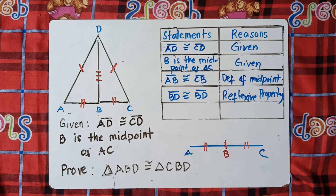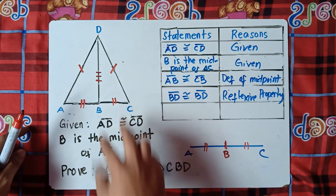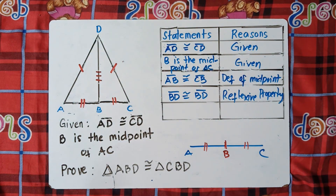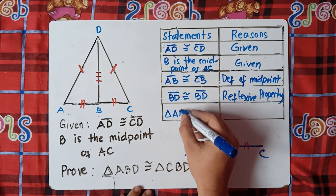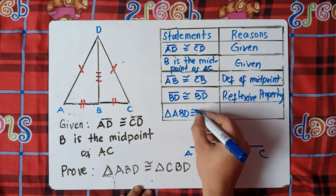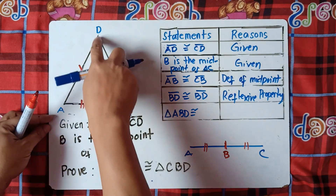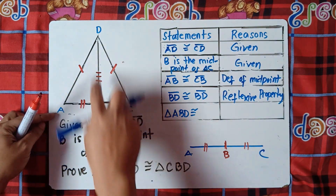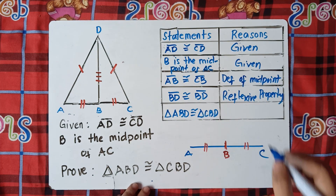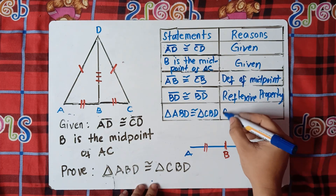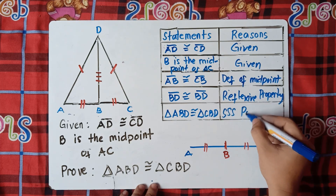Since we already have three sides which are congruent — AD and DC, AB and BC, and the shared BD — according to the SSS postulate, if three sides of one triangle are congruent to the other three sides, the two triangles are congruent. So triangle ABD is congruent to triangle CBD — reason: SSS postulate.